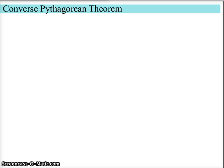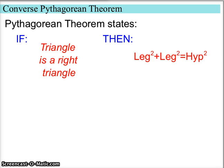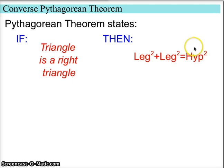We should start by reviewing what the Pythagorean Theorem states: if you have a right triangle — it has to have a right 90-degree angle in it — then the sum of the squares of the legs equals the square of the hypotenuse. Leg squared plus leg squared equals hypotenuse squared.